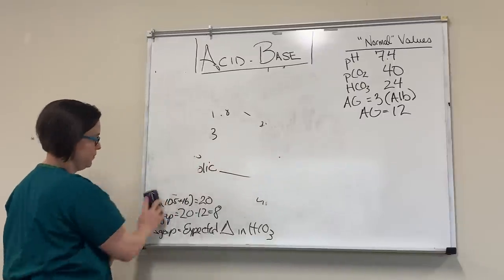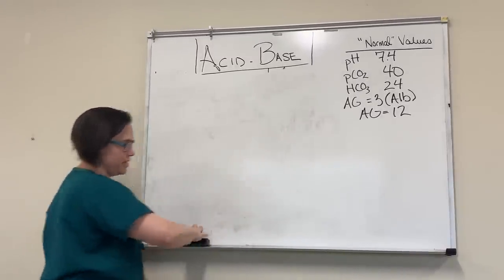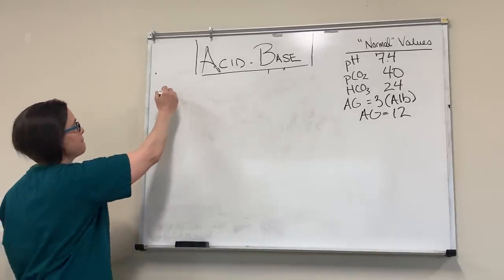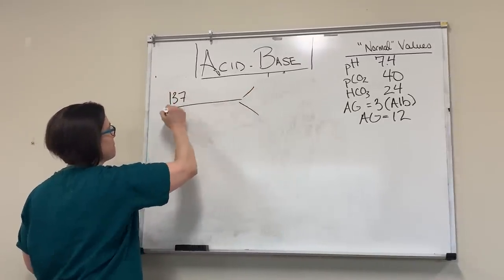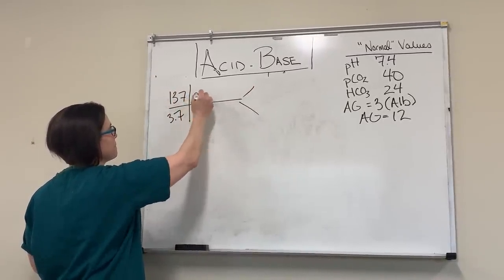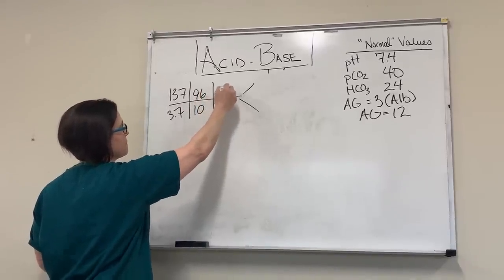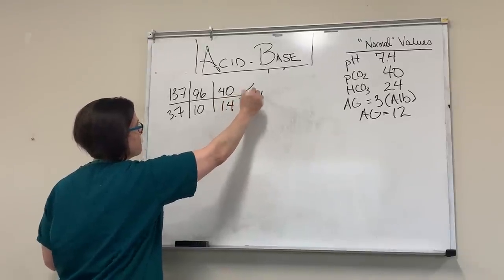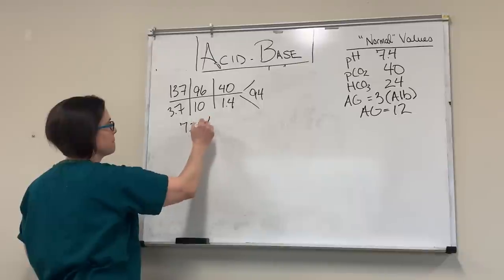We've got two more — repetition is key. Third set of numbers: sodium 137, potassium 3.7, chloride 96, bicarb 10, PCO2 40, creatinine 1.4, glucose 94, pH 7.26, PCO2 23.